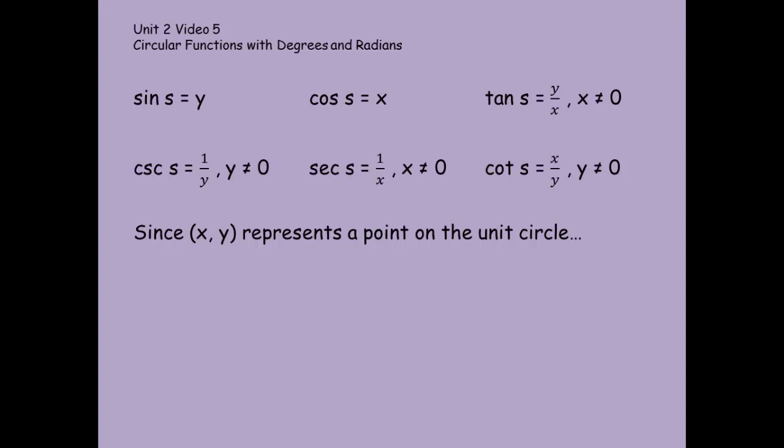Our cosecant, that's the csc of s, is equal to 1 over y. That is the reciprocal of sine, where y cannot be 0. The secant of s is equal to 1 over x, where x cannot be 0. That's the reciprocal of cosine. And our cotangent, as you can notice here, is the reciprocal of tangent, where y cannot be 0 this time.